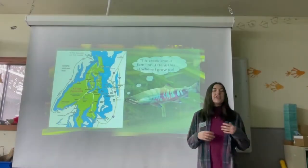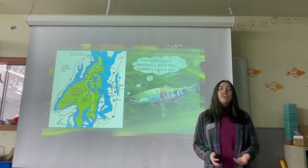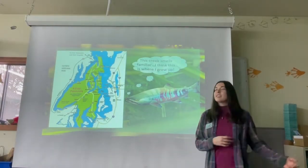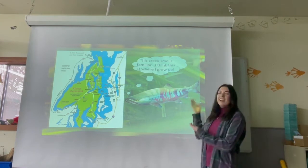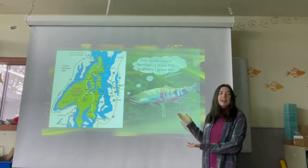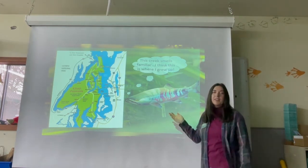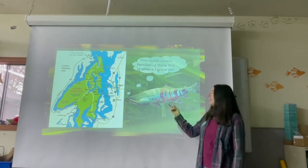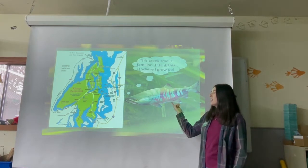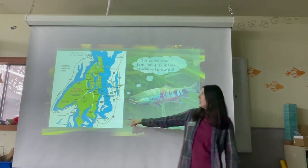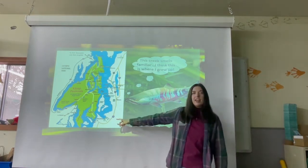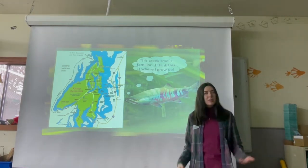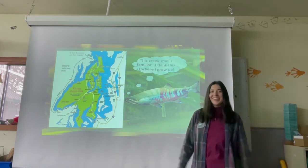Once our fry have done all their imprinting, when they become spawning adults returning to their native stream, they can smell their way home. When they get close to the Puget Sound area, they'll recognize it as familiar — the place where they grew up.